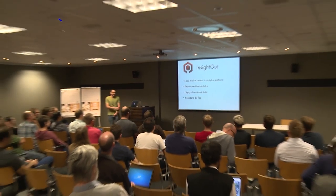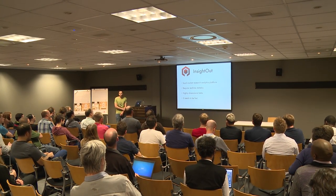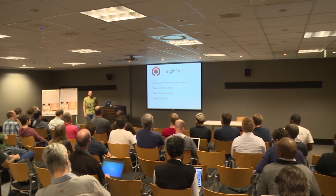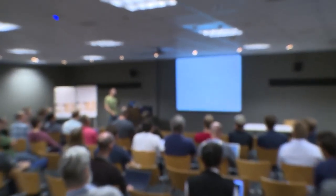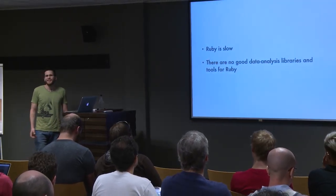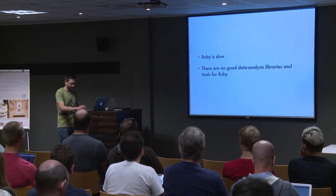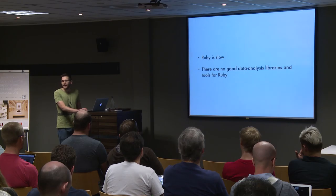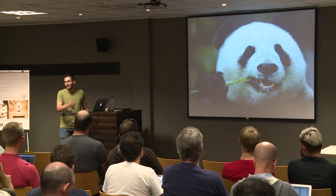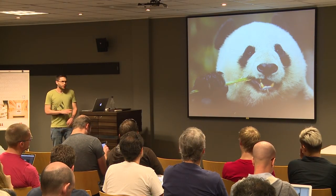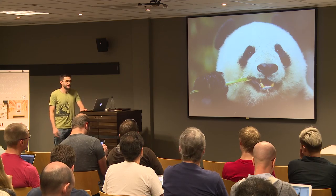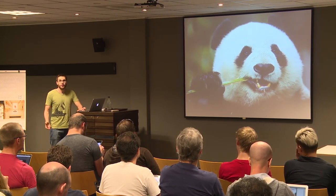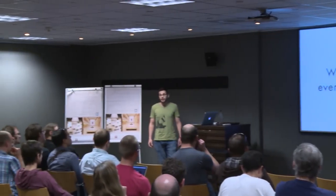We have a product called Inside Out — it's a software-as-a-service market research platform. It needs real-time statistics on highly dimensional data and it needs to be pretty fast. The problem is that Ruby is pretty slow. There are no real good tools for data analysis in Ruby; there's NArray and that's about it. So we started looking for a solution. As has been mentioned a few times at this conference, there's pandas, which is pretty cool, there's also NumPy and all kinds of other stuff, because Python has been adopted so widely in the scientific community.